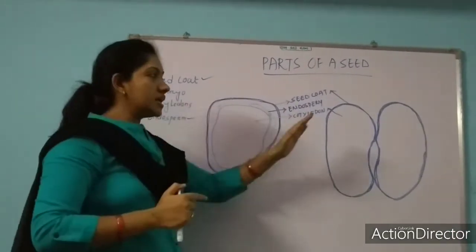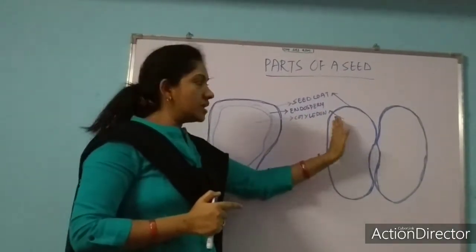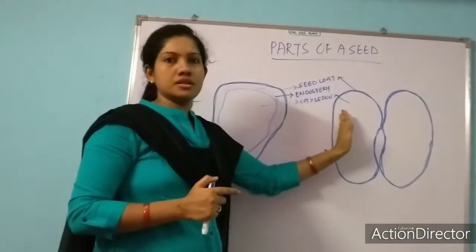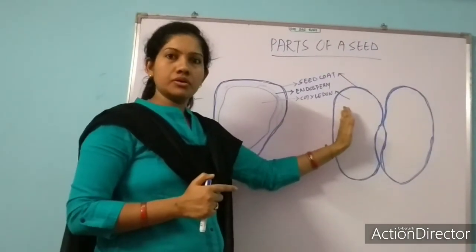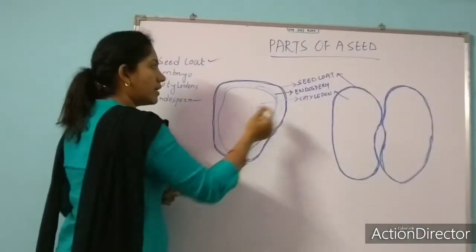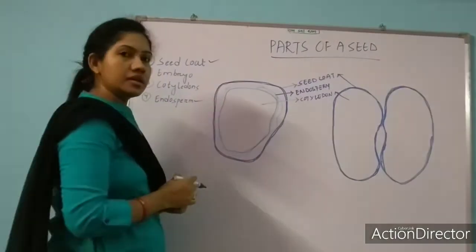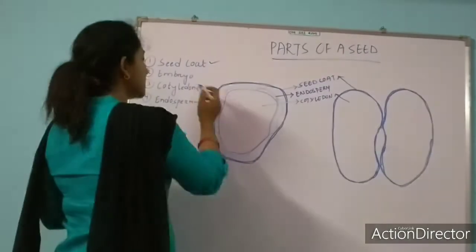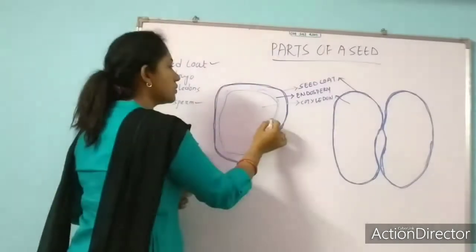In dicot seed it has two cotyledons. After cotyledon, we get the last part — that is the embryo.